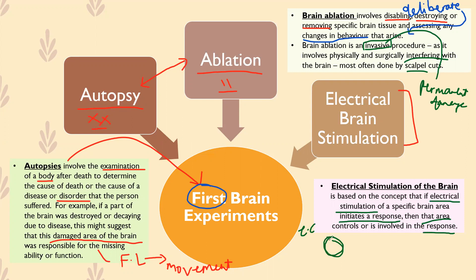If the electrical current goes through the top part of the head — which contains the parietal lobe — and the person starts saying they feel cold or a sensory experience, you can confirm that electrical stimulation of the parietal lobe initiates sensory experience. This confirms that the parietal lobe is involved in sensory experience. That's what electrical stimulation of the brain is.